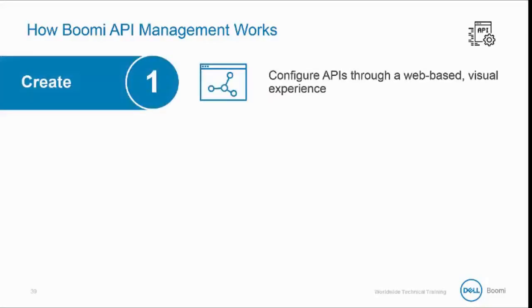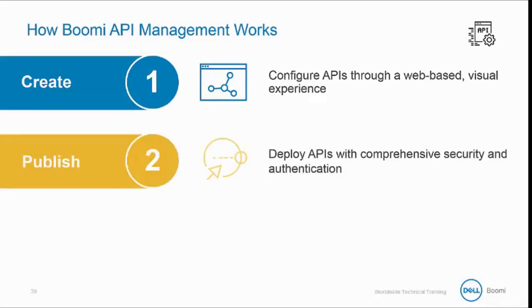You can create APIs from new or existing integration processes. Having full lifecycle management provides the flexibility as you evolve these services with a controlled mechanism to roll out in an organized fashion and adapt to your customer needs. You can publish APIs anywhere — on premises or in the cloud — depending on where it's best suited for your organization.